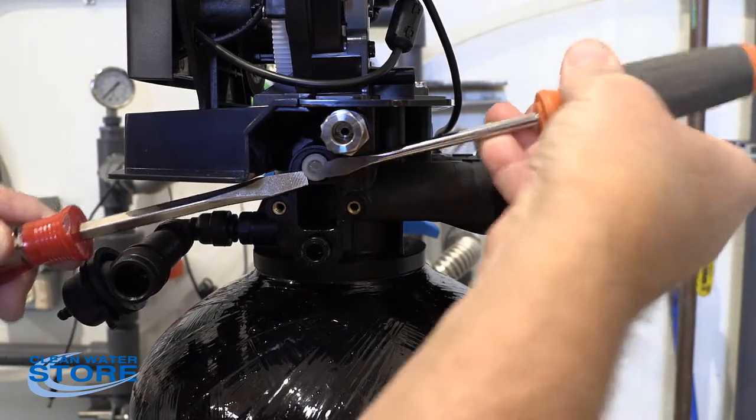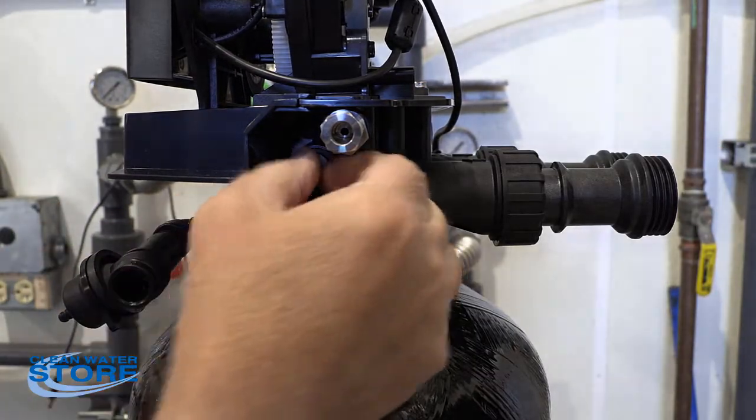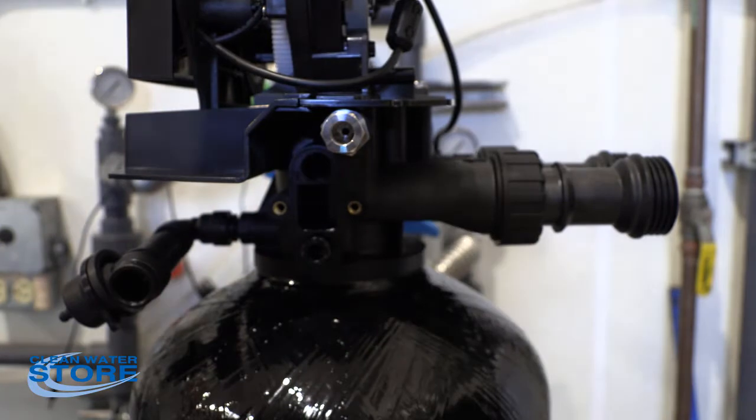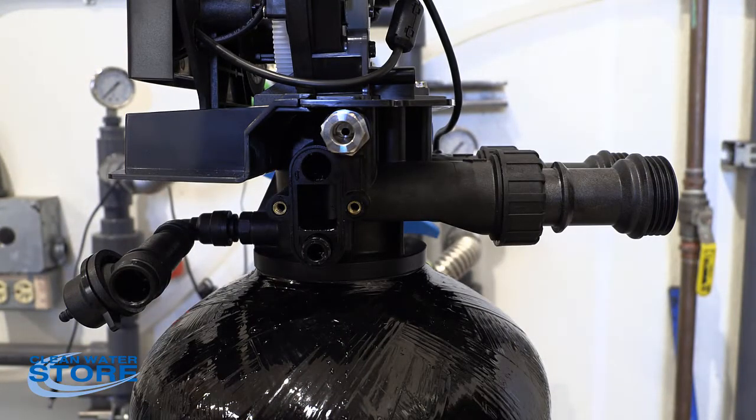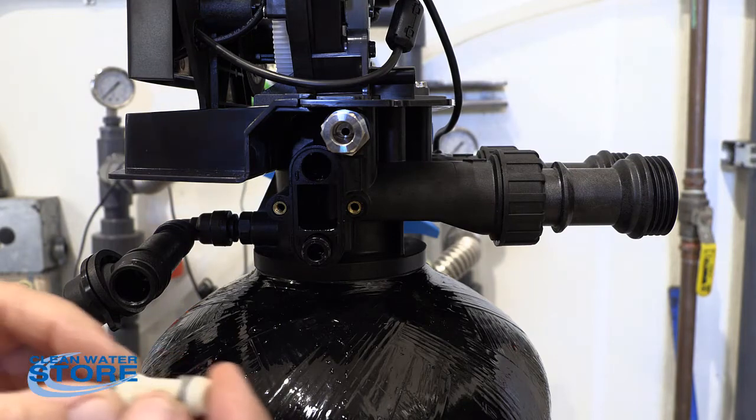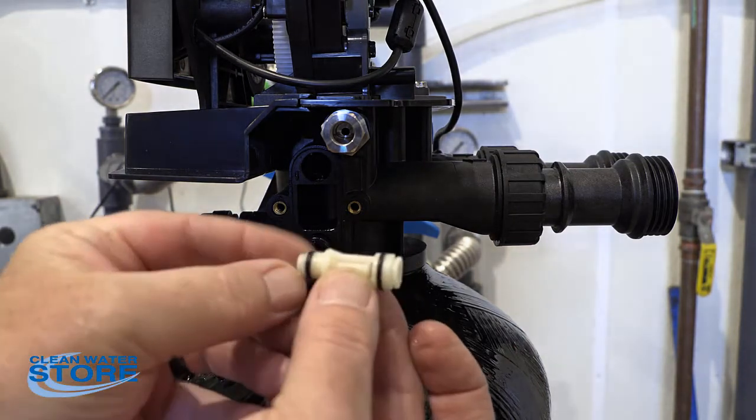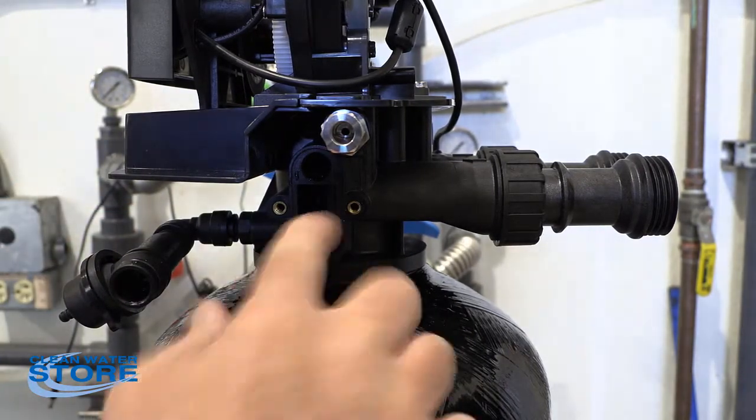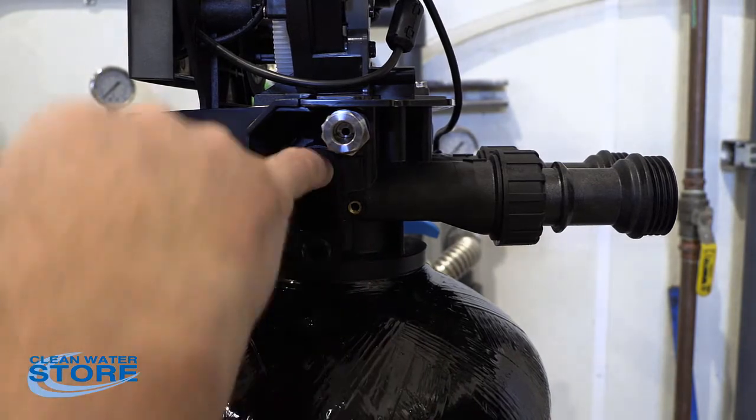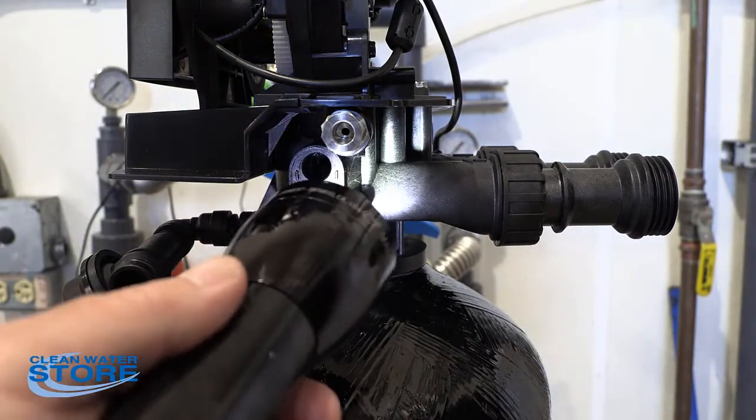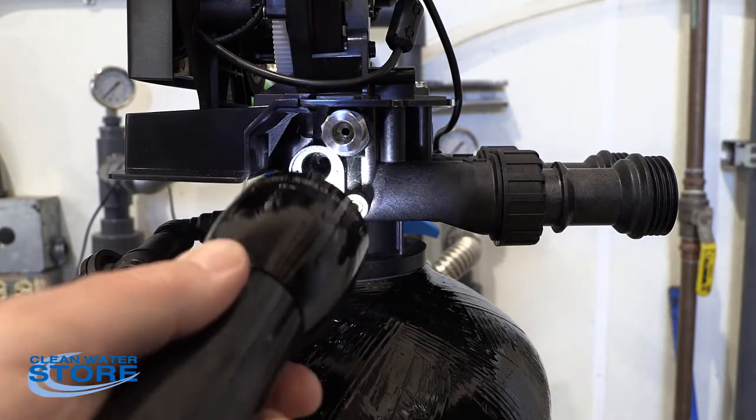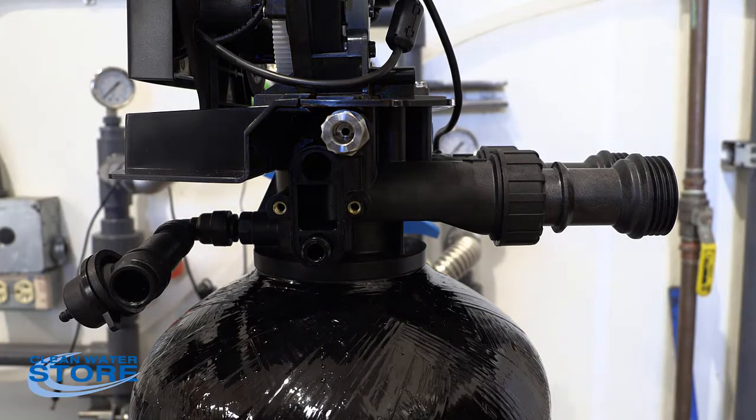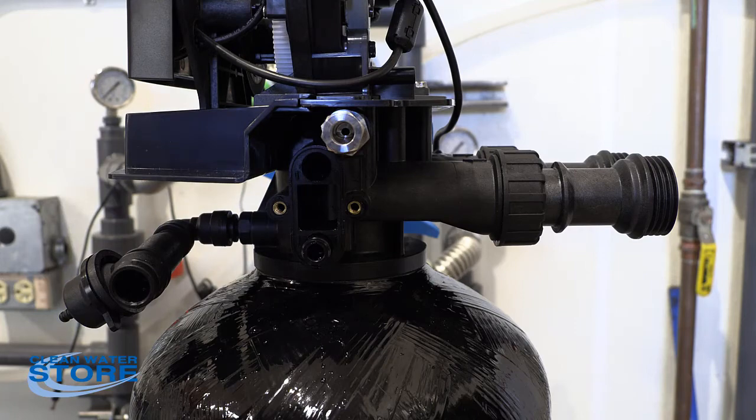That injector will come right out. And there's your injector. Now you want to notice here with the injector, you have an o-ring here and an o-ring here. So you want to make sure you get that all cleaned out in there. If there's any gunk mess in there, go ahead and clean it out. Then do a good inspection. You want to look up inside, make sure you don't see any debris. Clean everything out real well.